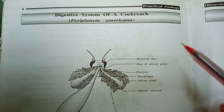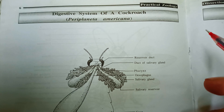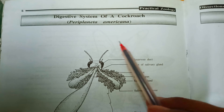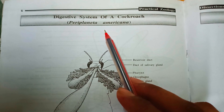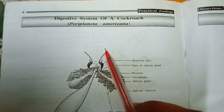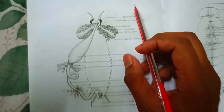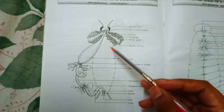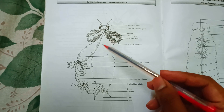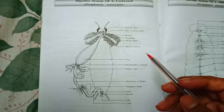Suppose in an exam, your teacher gives you a cockroach and instructs you to dissect it and to draw the digestive system of a cockroach. At that time, you have to draw this figure of the digestive system of a cockroach. So now we are going to discuss this topic.